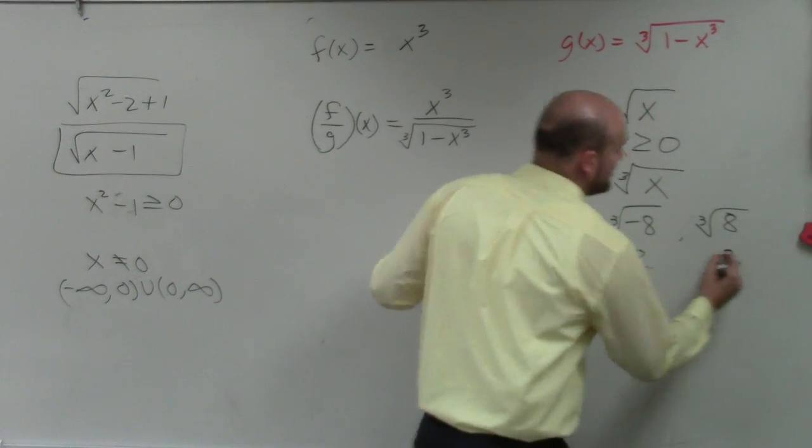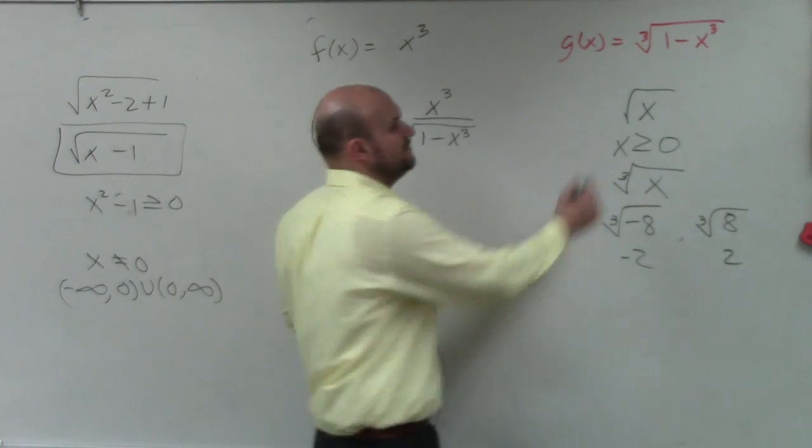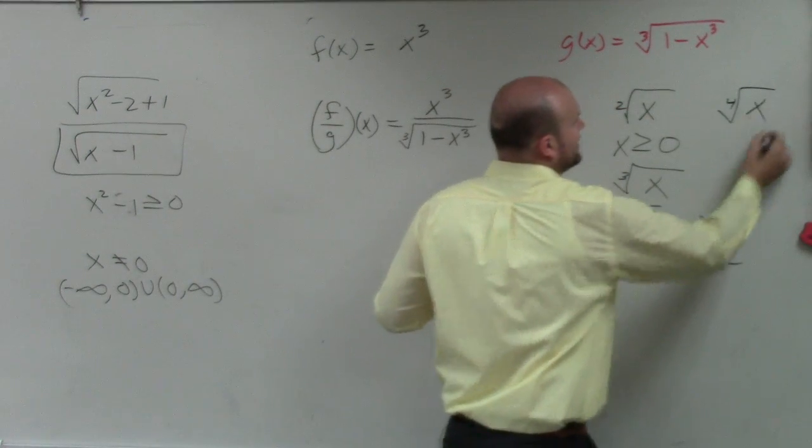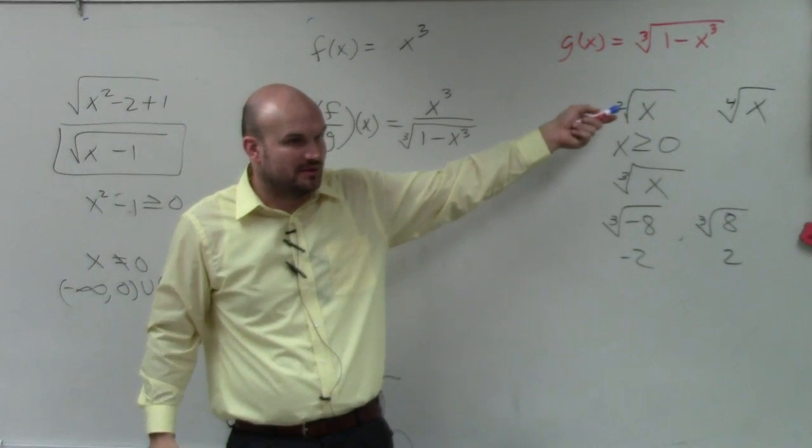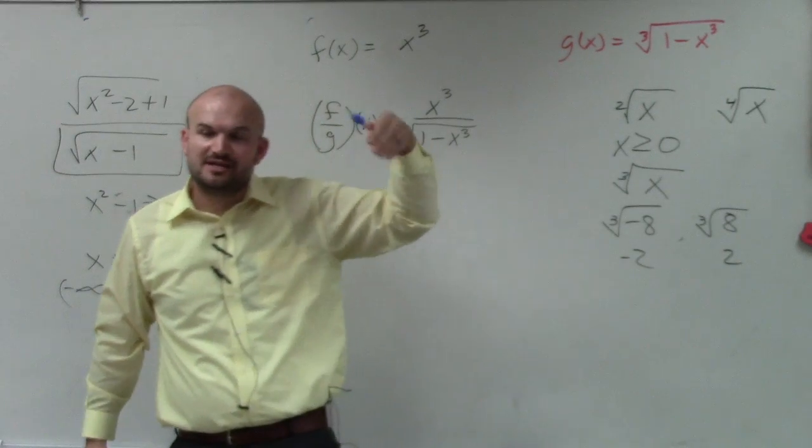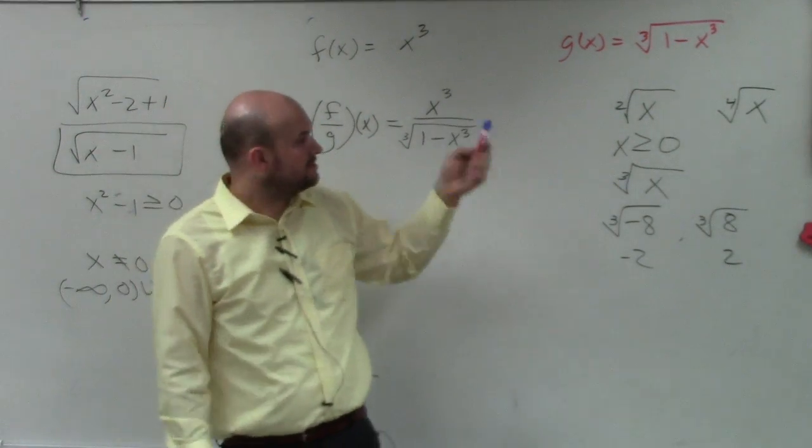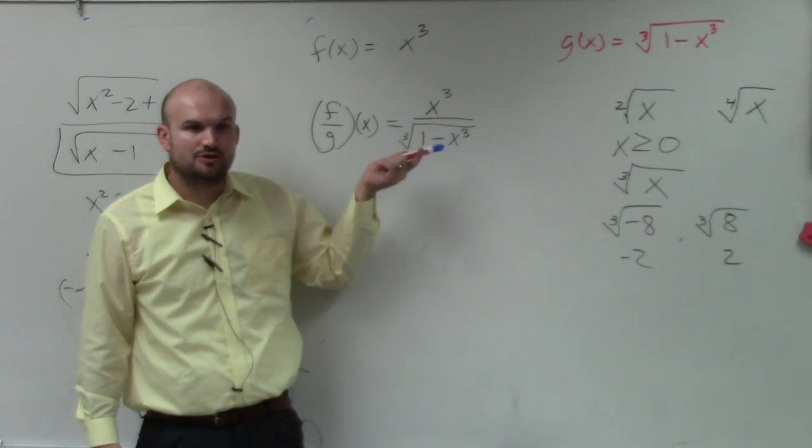And the cube root of a positive number is just a positive solution. The problem comes when you're talking about an even root, if it's the square root, if it's the fourth root. Any even root, you can only take the even root of a positive number. So anytime you're taking the even root of a negative number, it's not going to be able to do that. So this is a cube root, but there's no restrictions on the cube root.